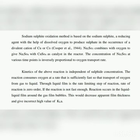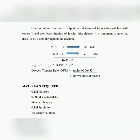Concentration of unreacted sulfite is determined by reacting with excess iodine (I2) and then back-titrating with thiosulfate. It is important to note that dissolved oxygen O2 is zero throughout the reaction. The reaction is: SO3(2-) + I2 → 2I(-) + SO4(2-). The saturation concentration of O2, denoted O2*, equals 8.43 × 10⁻³ g/L. Oxygen transfer rate (OTR) equals moles of oxygen × 32, divided by time × volume of reactor.